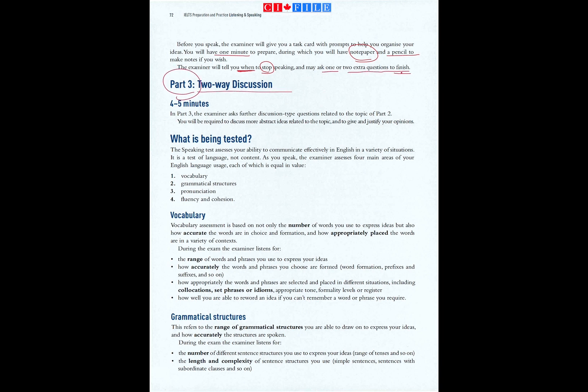Part three: Two-way discussion. Four to five minutes. In part three, the examiner asks further discussion-type questions related to the topic of part two. You will be required to discuss more abstract ideas related to the topic and to give and justify your opinions.